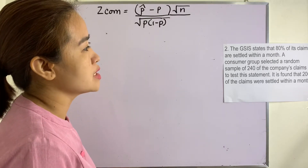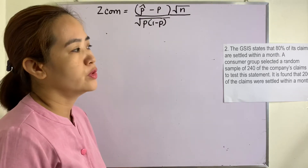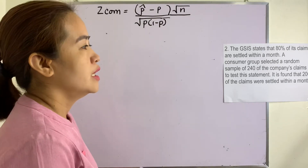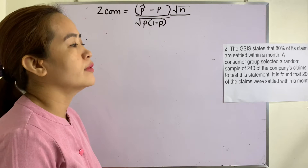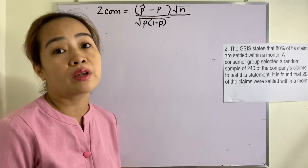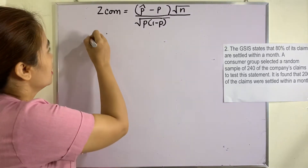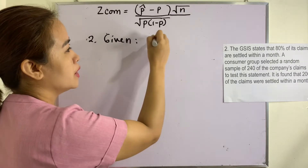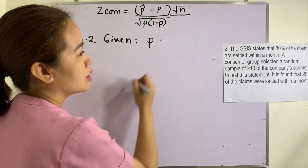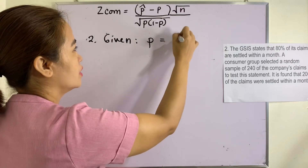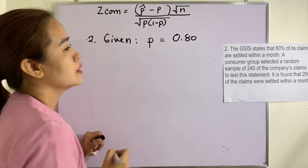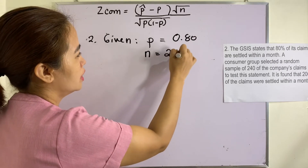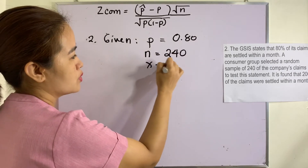Example number two: The GSIS states that 80% of its claims are settled within a month. A consumer group selected a random sample of 240 claims to test this statement, and it was found that 200 of the claims were settled within a month. The given values are: p equals 0.80, n equals 240, and x equals 200.